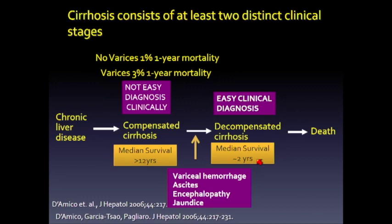Our goal in using liver elastography is to find patients either before they reach compensated cirrhosis — at the stage of severe fibrosis — or at compensated cirrhosis, so they can be treated and not progress to decompensated cirrhosis. Varices also play a role: without varices, mortality in compensated cirrhosis is about 1% per year; with varices, that increases by a factor of 3%, and basic ultrasound imaging is very helpful there.